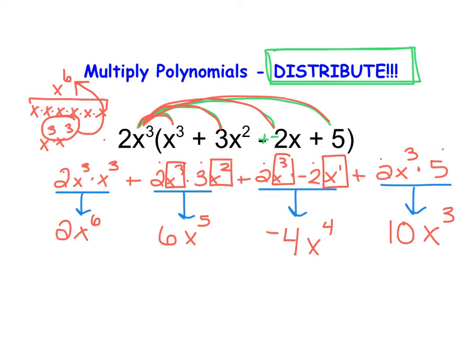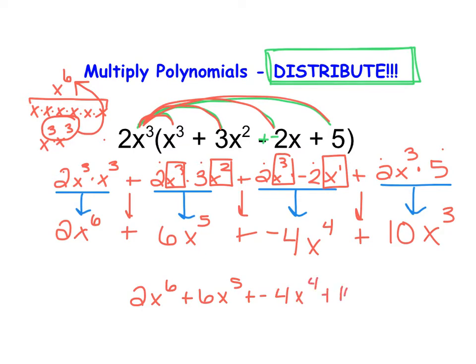So here I have 4 terms, and I know that there's an addition sign between each of them. Looking at them more closely, they're already in descending order with exponents of 6, 5, 4, and 3, and none of them are like terms. So my final answer here is 2x to the 6th plus 6x to the 5th plus negative 4x to the 4th plus 10x to the 3rd.